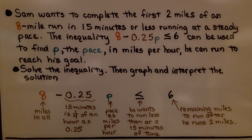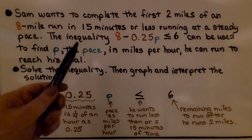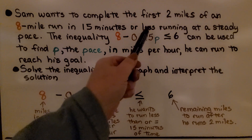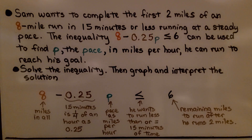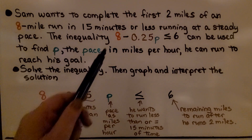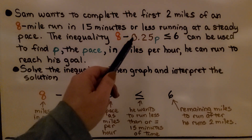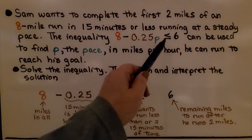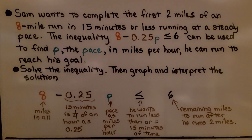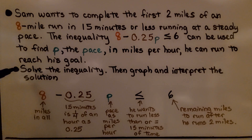Sam wants to complete the first two miles of an 8-mile run in 15 minutes or less, running at a steady pace. The inequality 8 minus 0.25p is less than or equal to 6 can be used to find p, the pace in miles per hour he can run to reach his goal. We need to solve the inequality, then graph and interpret the solution.